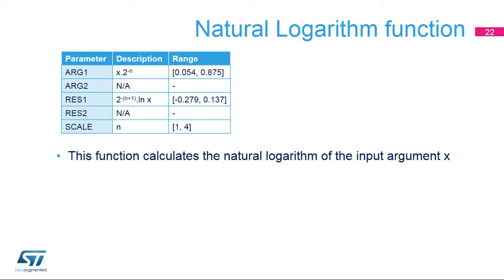This slide describes the features of the natural logarithm function. The primary argument is the input value x. Only values of x in the range 0.107 to 9.35 are supported. The value x must be scaled by a factor 2 raised to the negative n, such that x times 2 raised to the negative n is lower than 1 minus 2 raised to the negative n. The scaled value is programmed in arg1 and the factor n = 1 must be programmed in the scale parameter. The secondary argument is unused. The primary result, res1, is the natural logarithm; res1 must be multiplied by 2 raised to the (n+1) power to obtain the correct value. The secondary result is not used.